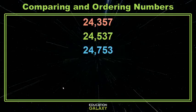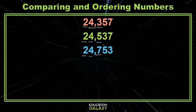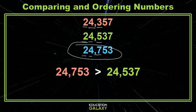Let's try this example. We have three numbers. We can compare these also. We just start with the leftmost place value, which is a 2. It's the same, so we move to the thousands — they're 4s, they're the same — so we move to the hundreds, and here's where we see a difference. Now we just compare the 7, the 5, and the 3. The 7 is largest.